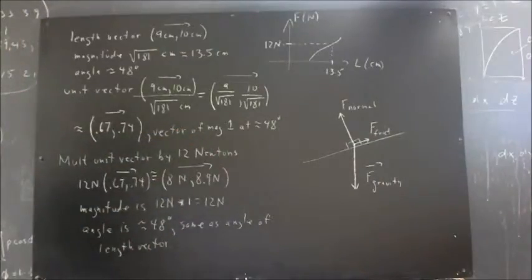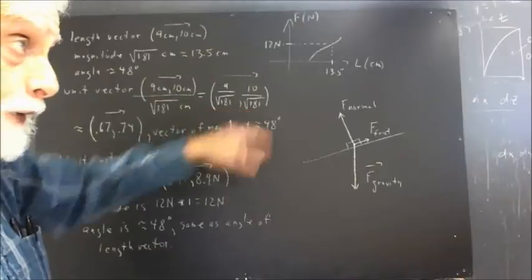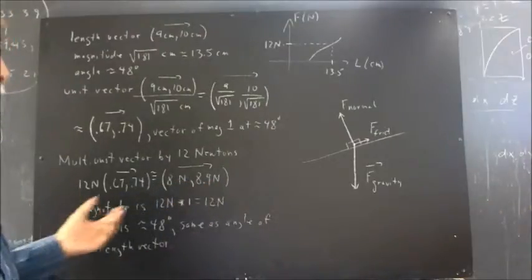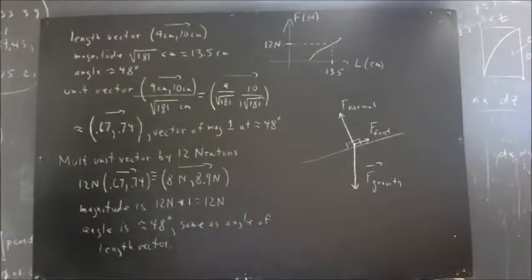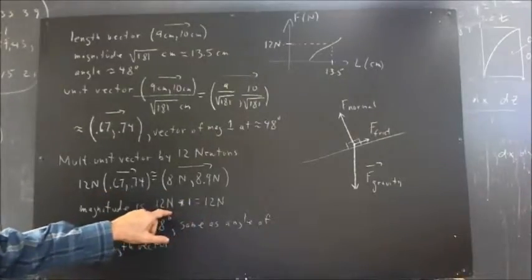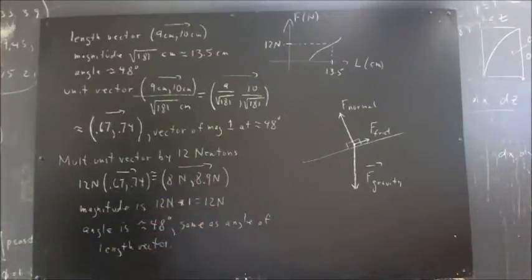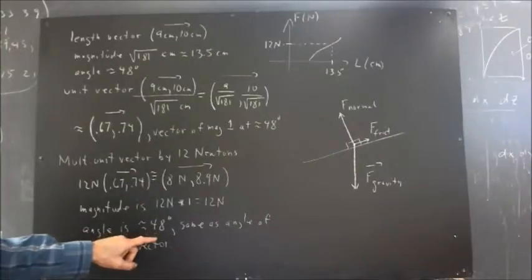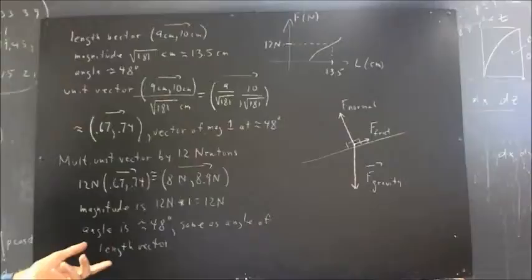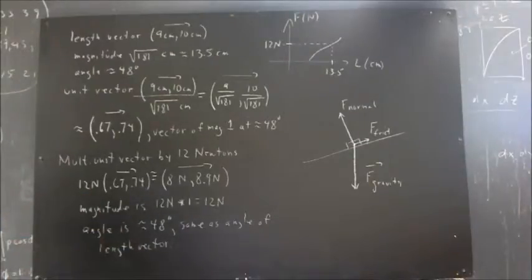Now, 12 newtons is a force. So when we multiply this unitless vector, because let's note again that the centimeters divided out, this vector has no units. But when we multiply it by some number in newtons, we do get a vector whose components are in newtons, and whose magnitude will be in newtons. What's the magnitude of this vector? Well, we're multiplying 12 newtons by a vector of magnitude 1. The vector that we get is going to have magnitude of 12 newtons times 1, or just 12 newtons. So this is a vector of magnitude 12 newtons, and its angle is still approximately 48 degrees. It's the same as the angle of the original length vector. So now we have a force vector in the direction of the length vector with the force that we want it to have.